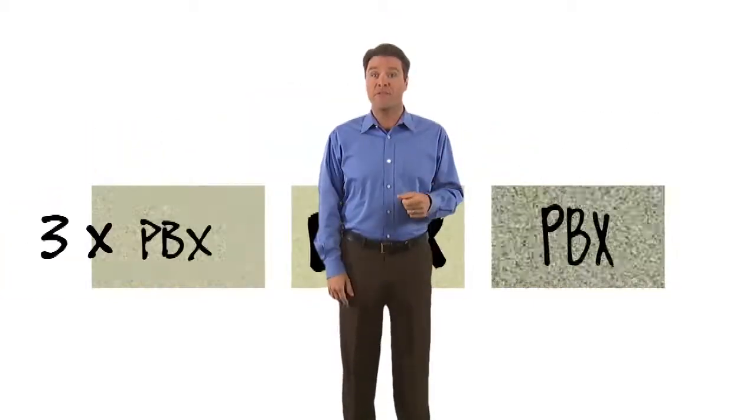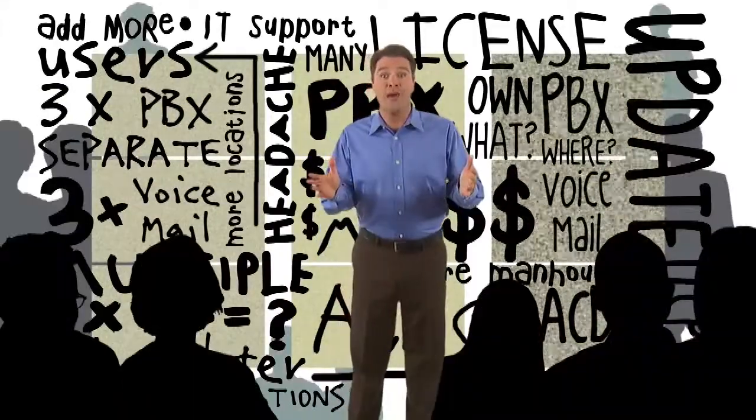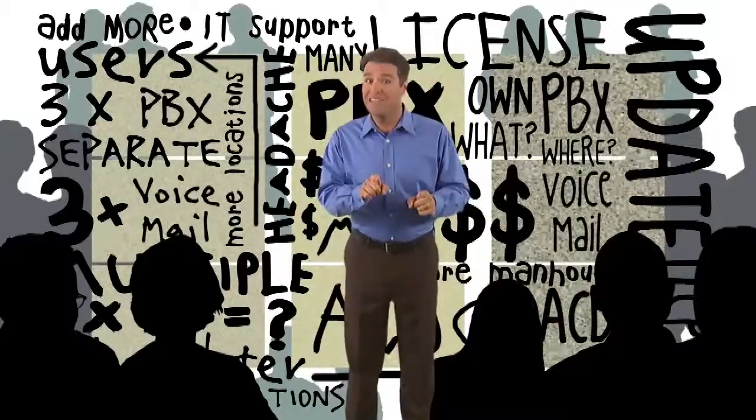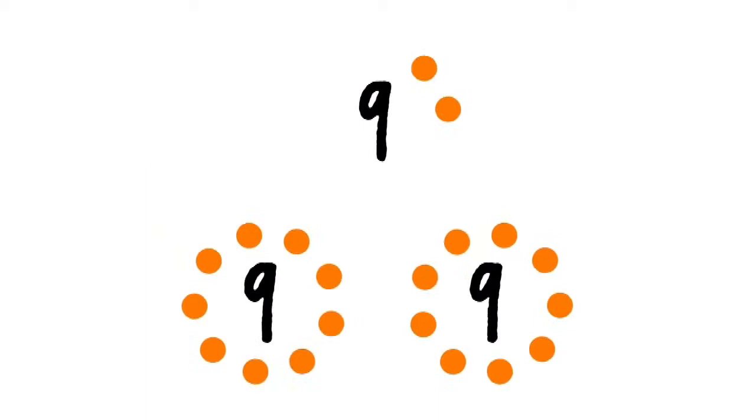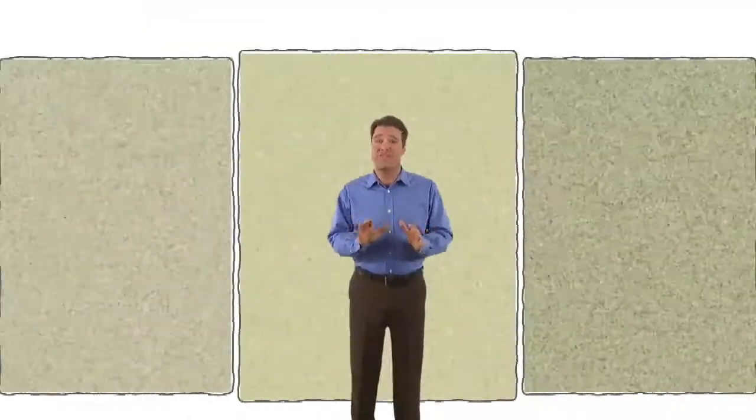With three locations, you'll have three PBXs, three voicemails, three ACDs, and who knows how many people to support it. Which means nine things to update when you add a user. Nine sets of licenses. Nine kinds of headache. And that's just for three sites. Imagine if you had twelve, or twenty. And that's only for IT. Users don't have it much better.